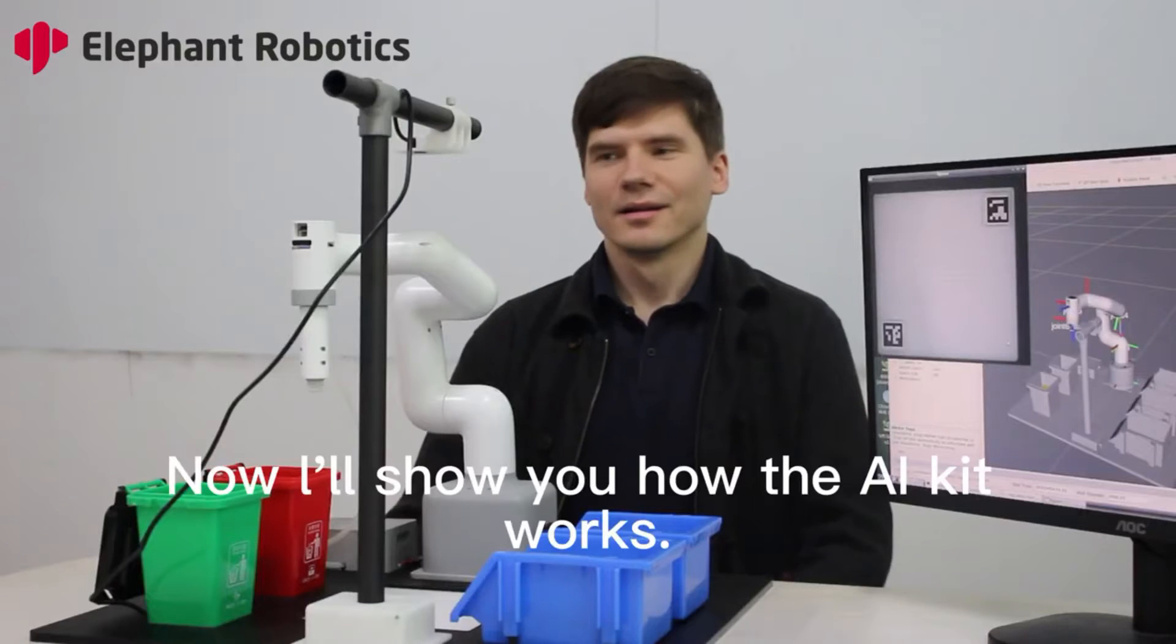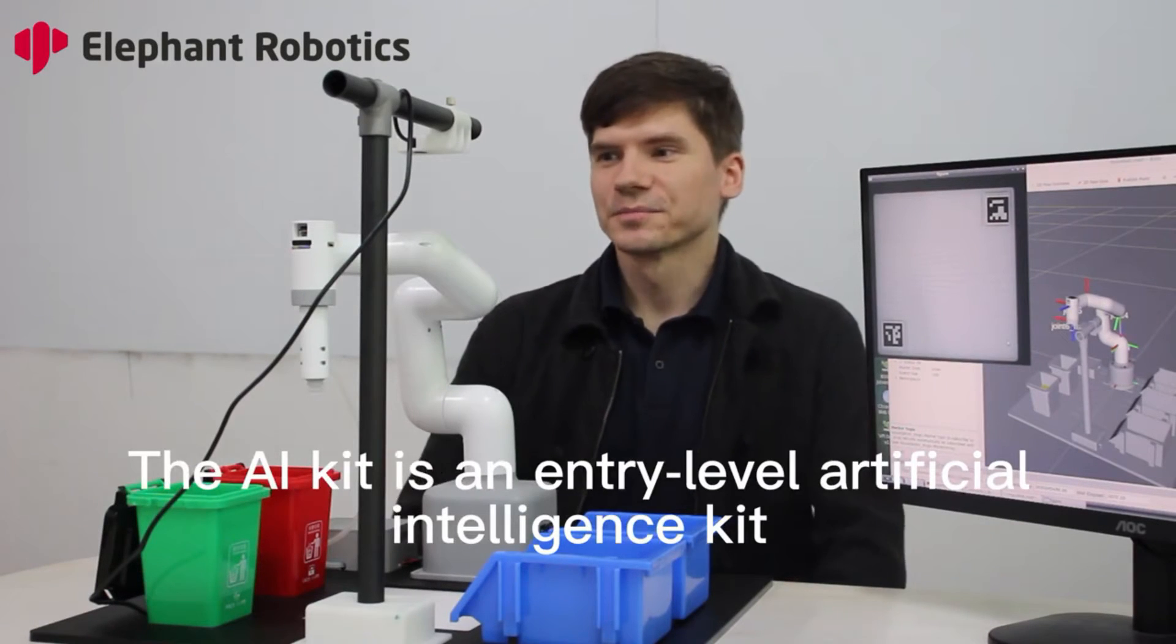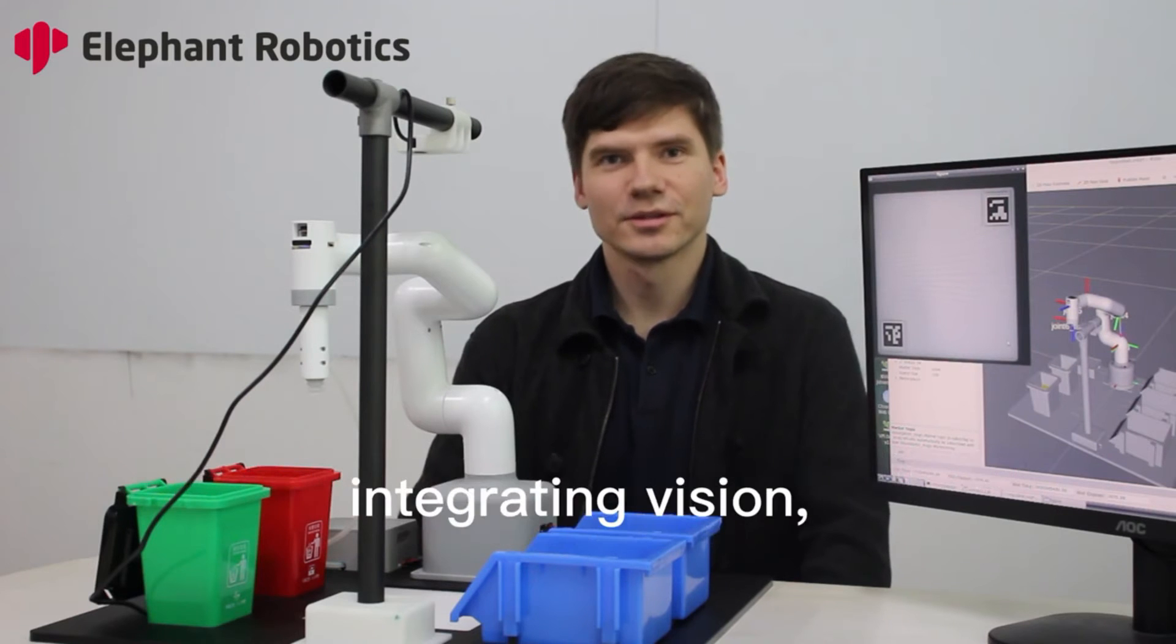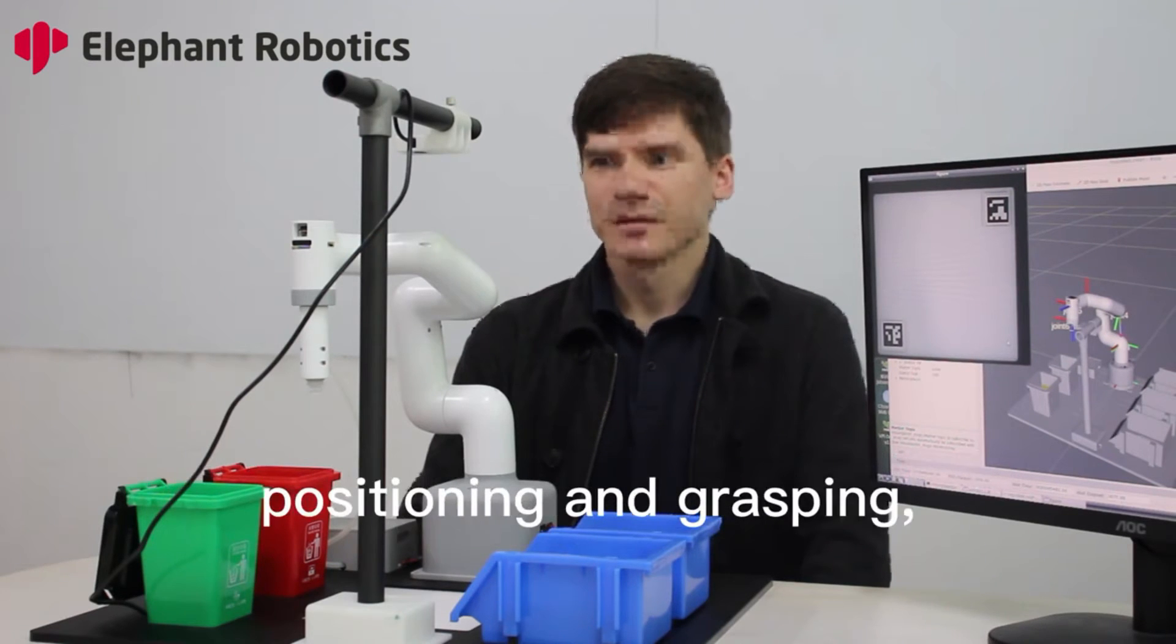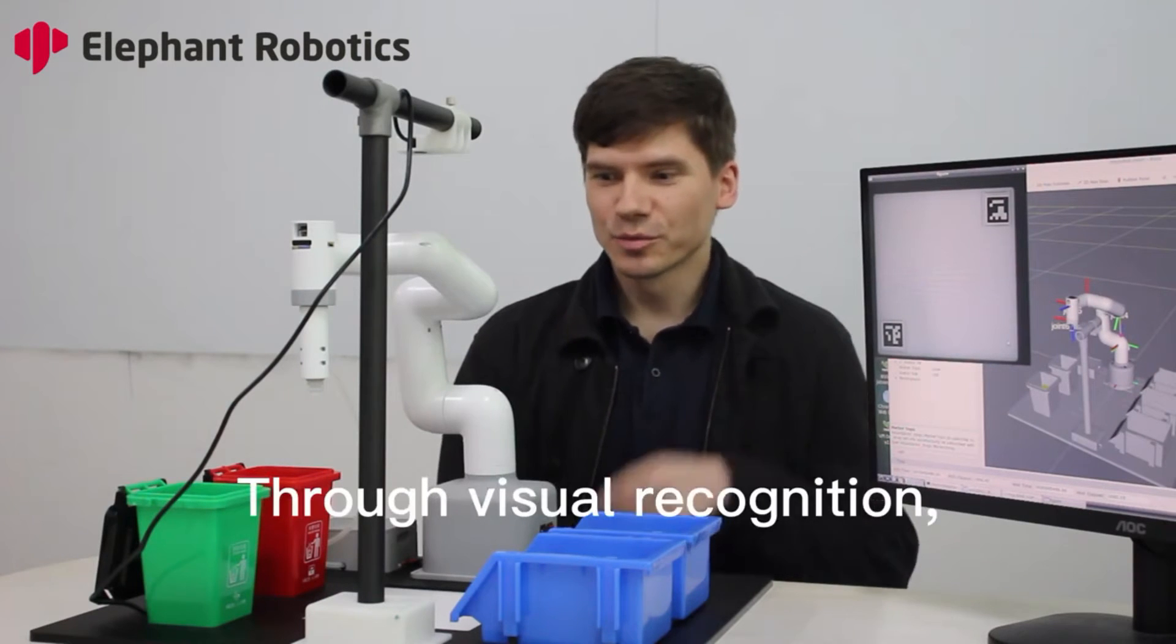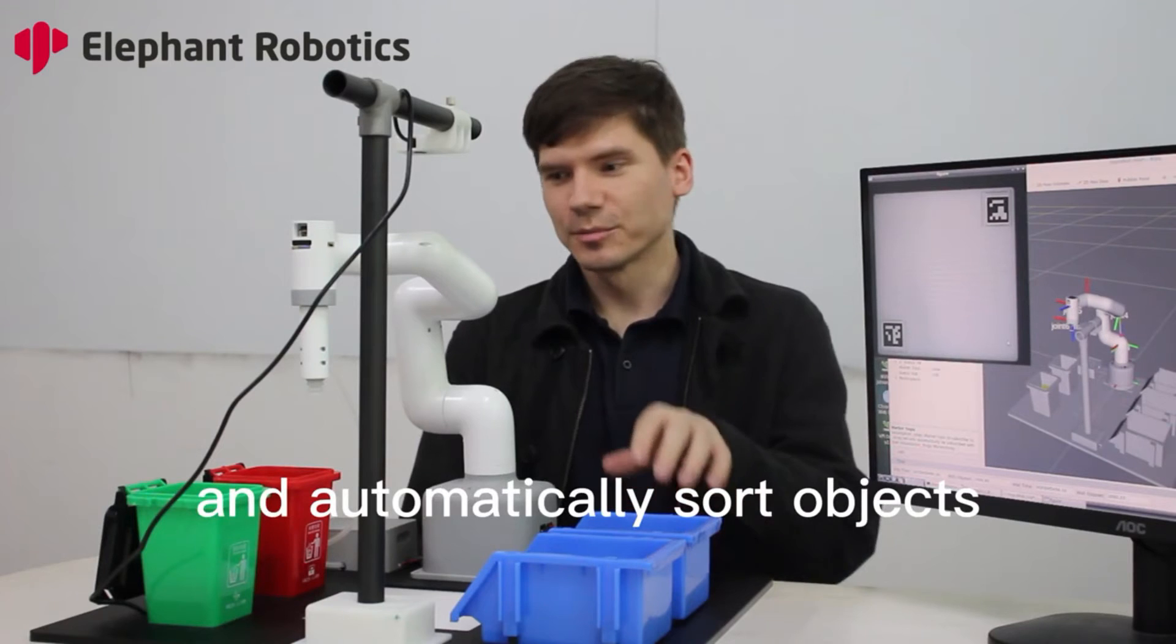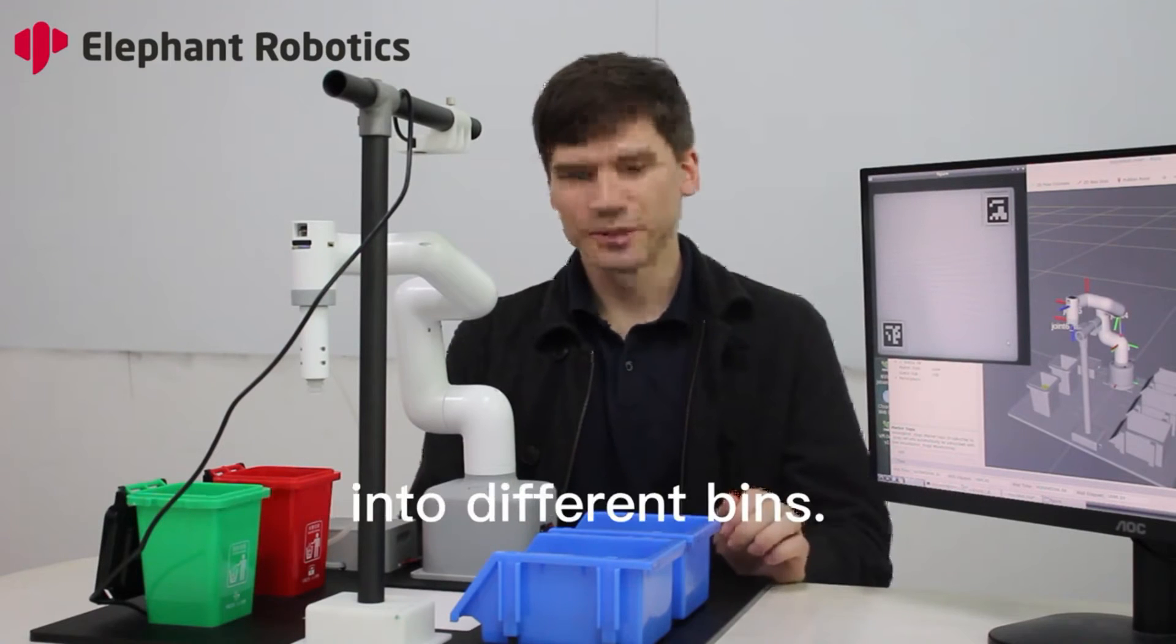Now I'll show you how the AI Kit works. AI Kit is an entry-level artificial intelligence kit integrating vision, positioning and grasping and automatic sorting parts. Through visual recognition, MyCobot will move and automatically sort objects into different bins.